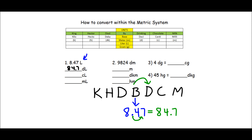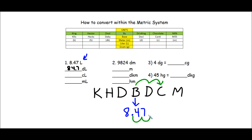Now let's go ahead and do the next problem. I have to convert 8.47 liters to centiliters. I've written it down right over here under base, or by, because that's where liters is found. And I'm going to centiliters, so I'm going two spaces to the right. I take my decimal and move it two spaces to the right. So my new number would be 847, which means there are 847 centiliters inside of 8.47 liters.